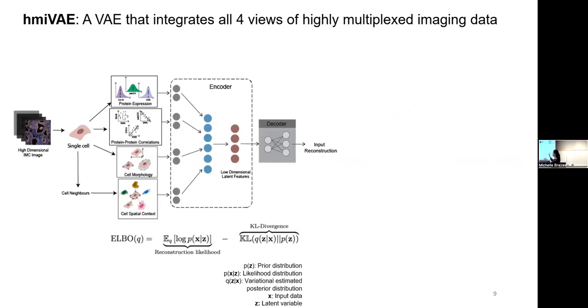So this is a general layout of how my model works. It takes in the four views as input. And at the encoder stage, it first learns a separate embedding for each of the inputs. These separate embeddings are then concatenated, and then a joint latent space is learned for all of them, for all of the cells. And then we have a decoder that samples from that latent space and tries to reconstruct the input, and how well the model does is monitored by an evidence lower bound function.